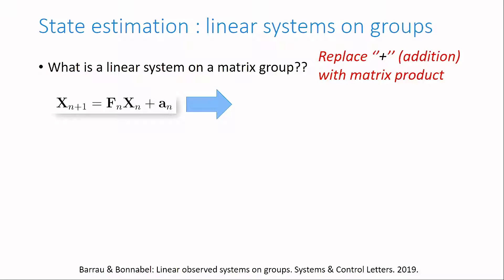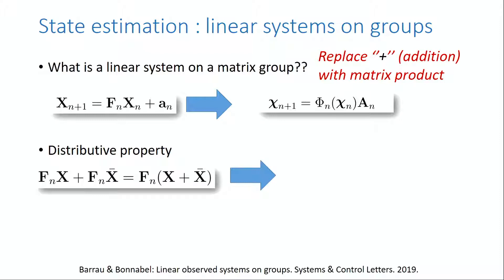Allow me to show you arguably the most important slide of this theoretical part of the talk. Let's assume we have a matrix representation of the state and let's mimic linear systems theory, replacing addition with matrix multiplication. We thus define a class of systems we take the liberty to call linear systems on groups. By merely replacing addition with matrix multiplication, I obtain in the realm of matrices chi the following discrete time dynamics, where phi is an analog to a linear map to be defined. What's the property of linear maps that I used earlier? It's the distributive property. If we seek its matrix multiplication counterpart, the property that phi should verify is as follows — in terms of group theory, such a map is called a morphism.